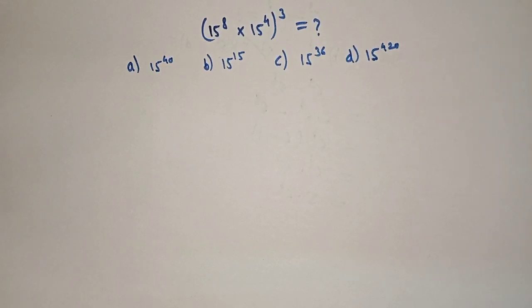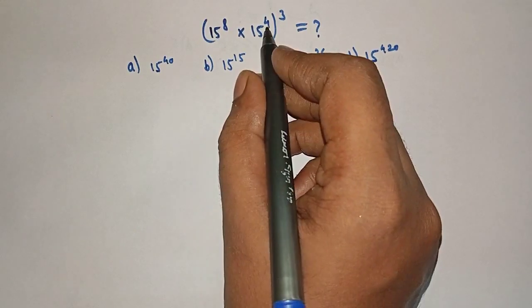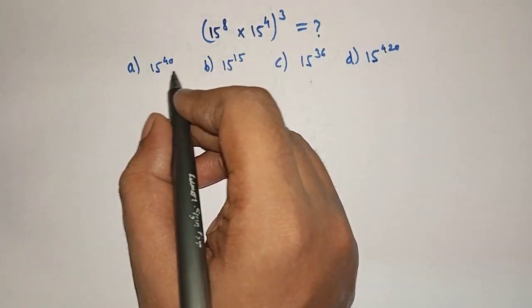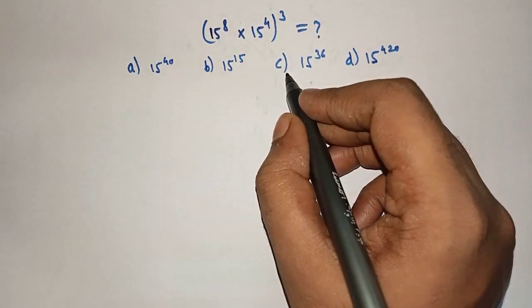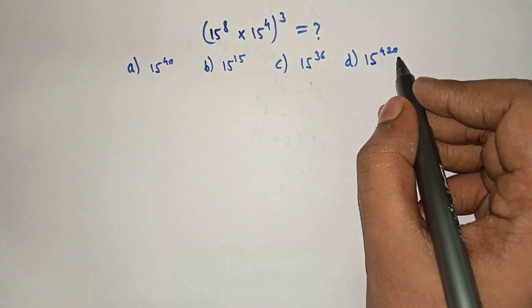Hello friends, welcome to AHA math. 15 raised to 8 into 15 raised to 4, the whole raised to 3 is equal to what? Option A, 15 raised to 40. Option B, 15 raised to 15. Option C, 15 raised to 36. Option D, 15 raised to 420.